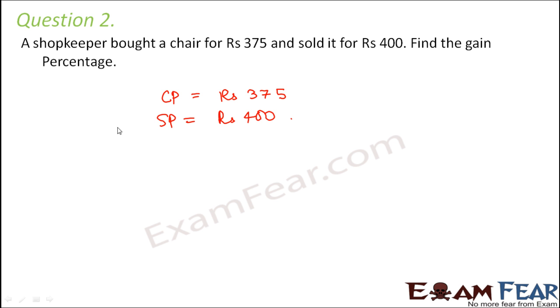So gain is nothing but profit. So how much gain will the shopkeeper make out of it? That is nothing but SP minus CP, that is selling price minus cost price, which would be Rs 400 minus 375, that is equal to Rs 25. So this would be his gain.